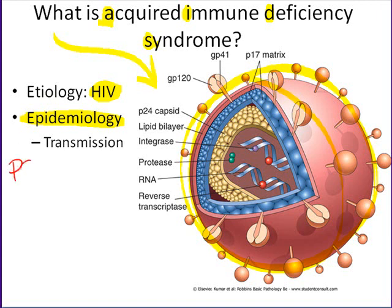When you have that kind of transfer either through the blood or by injecting into the blood or into tissues, that's called parenteral transmission. The final category is mother-to-infant transmission. It is possible for an HIV-positive mother to pass the HIV onto the developing fetus.